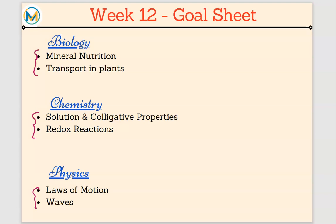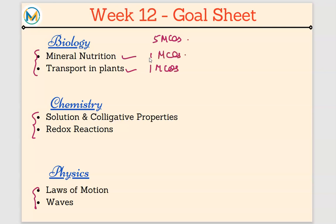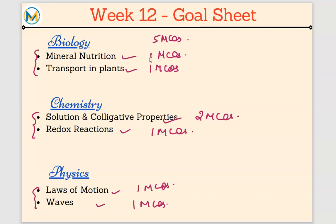Nutrition and Transport in Plants belong to the Plant Physiology chapters. Entire Plant Physiology gives you five MCQs, so these two chapters will give you one MCQ each. In Chemistry, Solutions and Colligative Properties has two MCQs, and Redox Reactions has one MCQ. In Physics, Laws of Motion has one MCQ and the Waves chapter has one MCQ each.